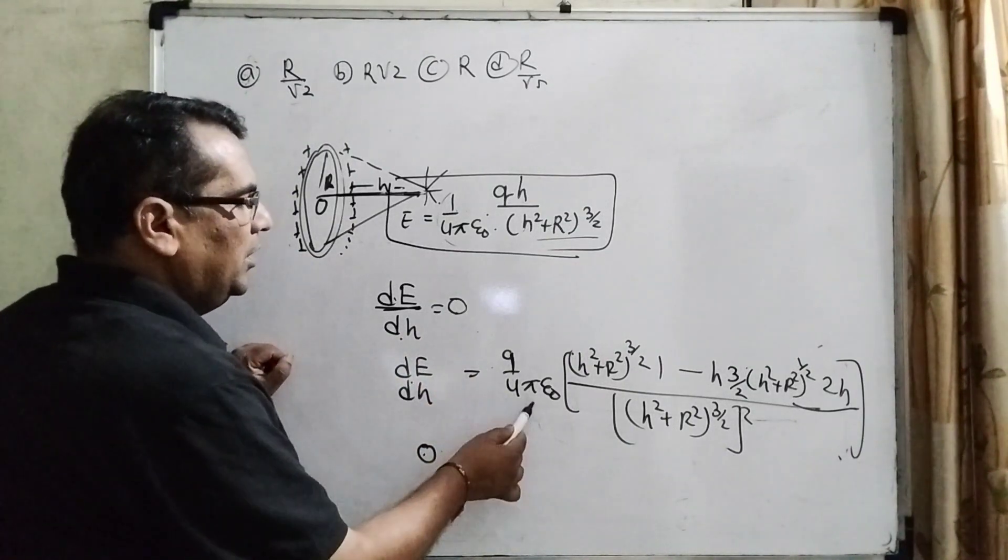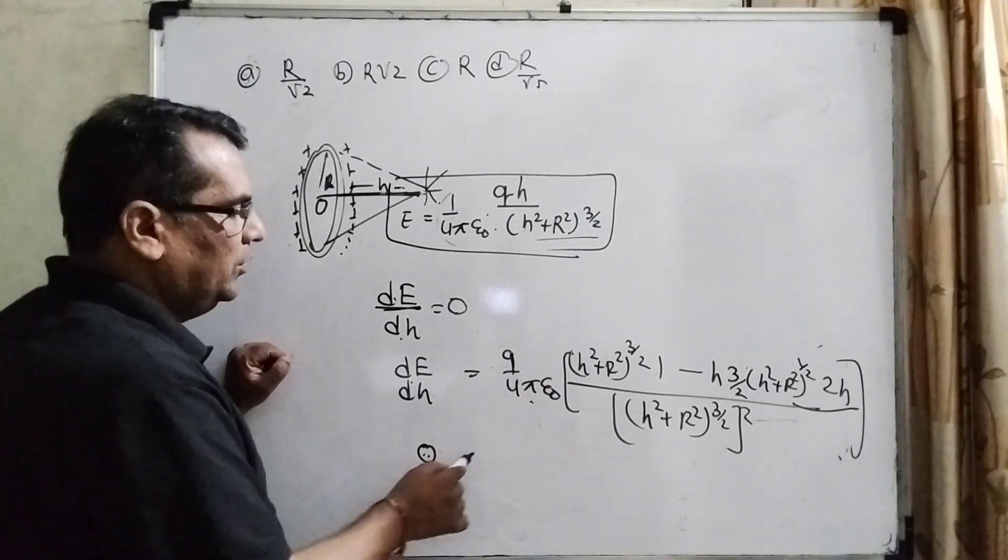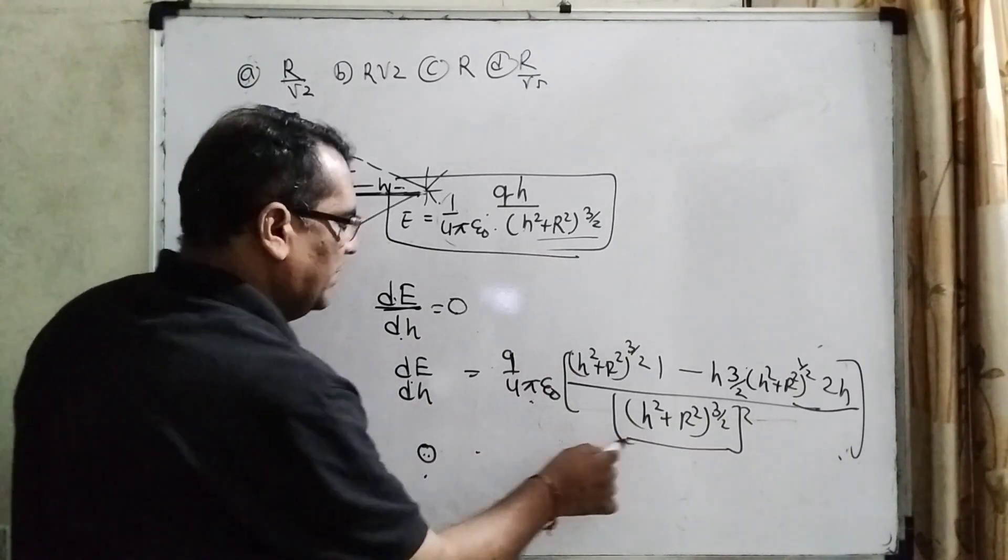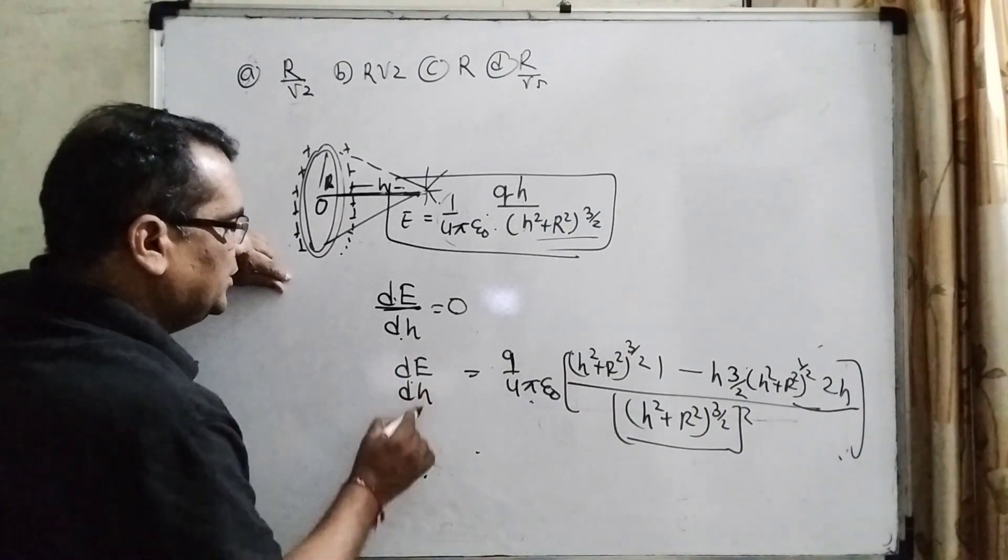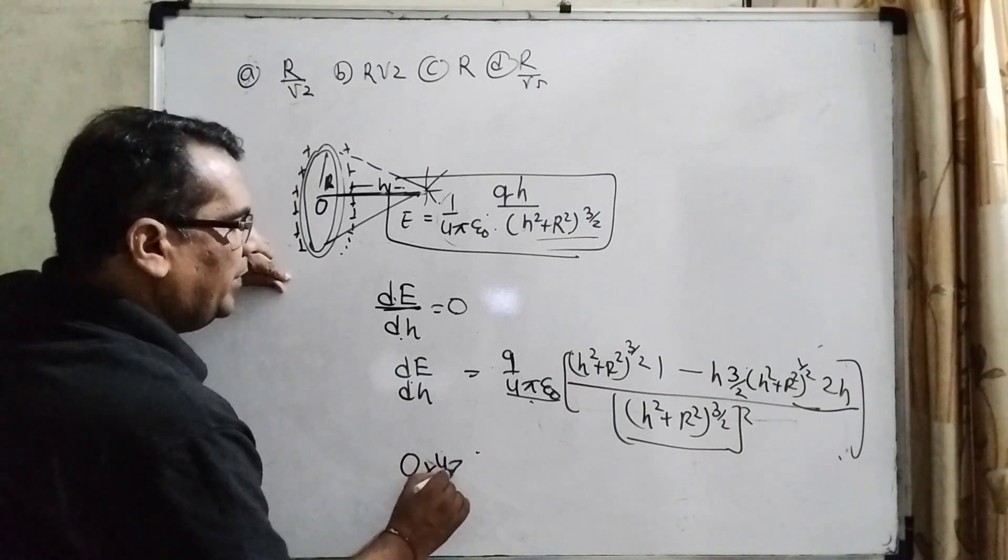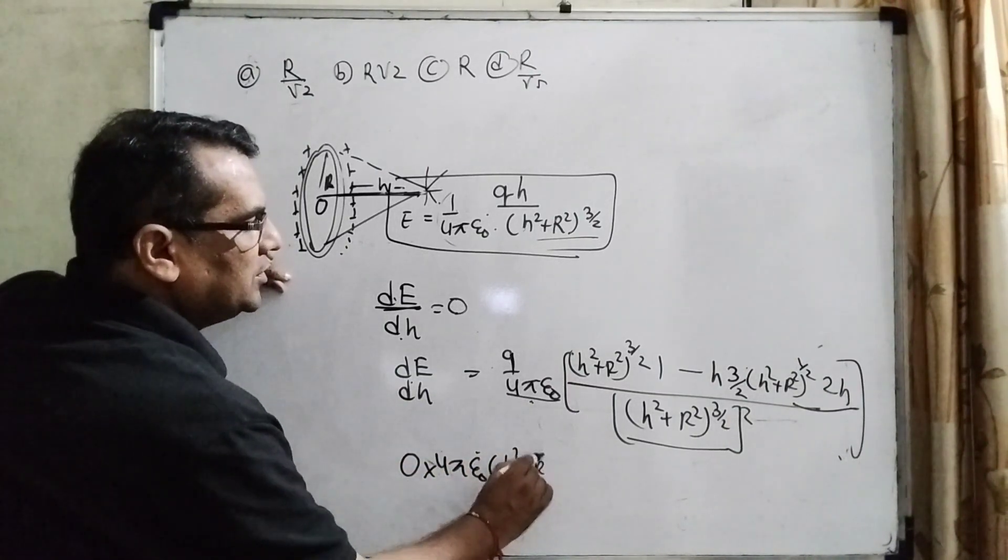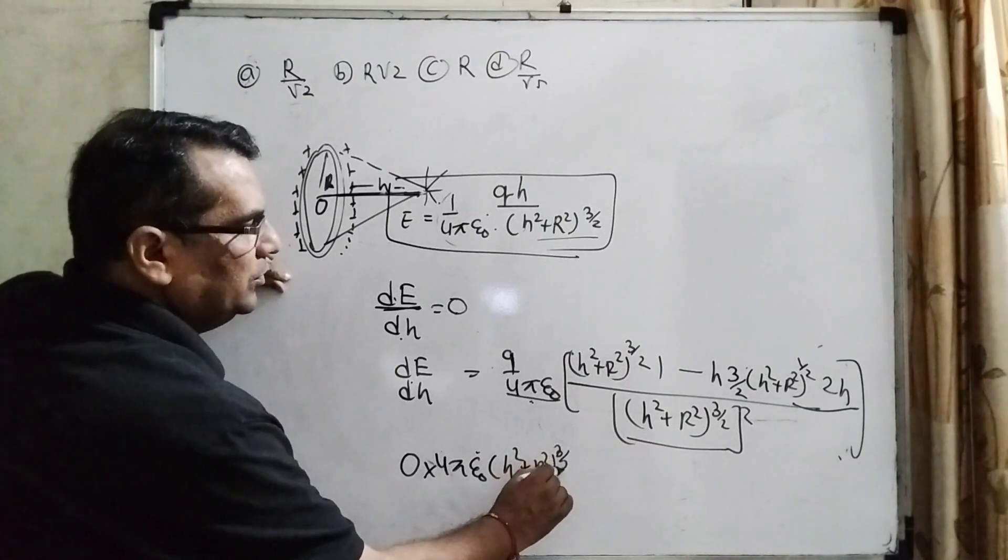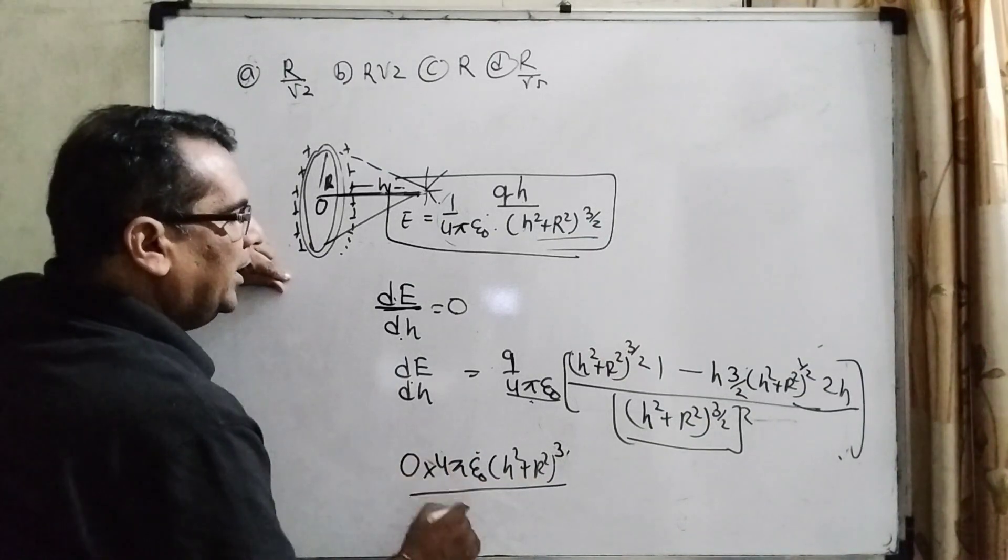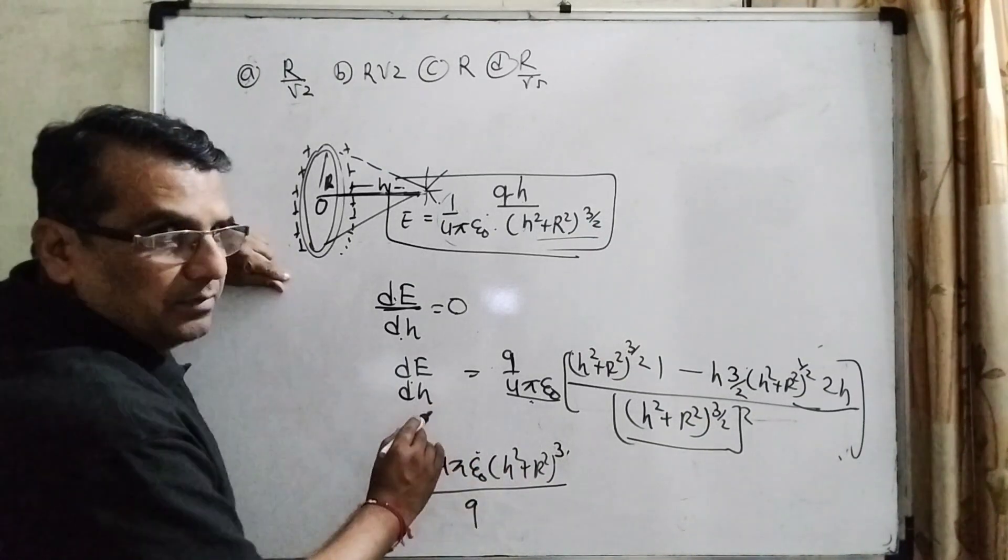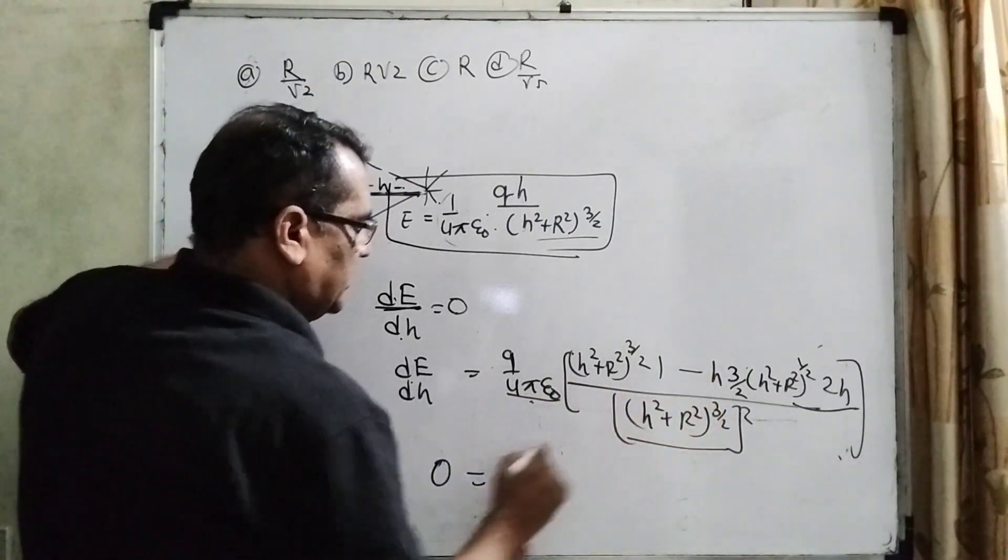So therefore, this equals 0. Multiplying by this term gives 0, dividing by q gives 0. The whole term multiplied becomes 0. Then this term 4π epsilon_0, this term (h² + R²) raised to power 3/2, 3/2 times 2 means 3, and over q - this whole term becomes 0. Now, only this term remains.